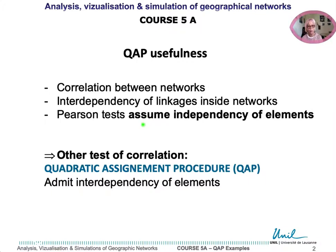This is why another test was proposed for these kinds of correlations, based on quadratic assignment procedures — namely QAP — which admits the interdependency of the elements, that is, the linkages inside each network.